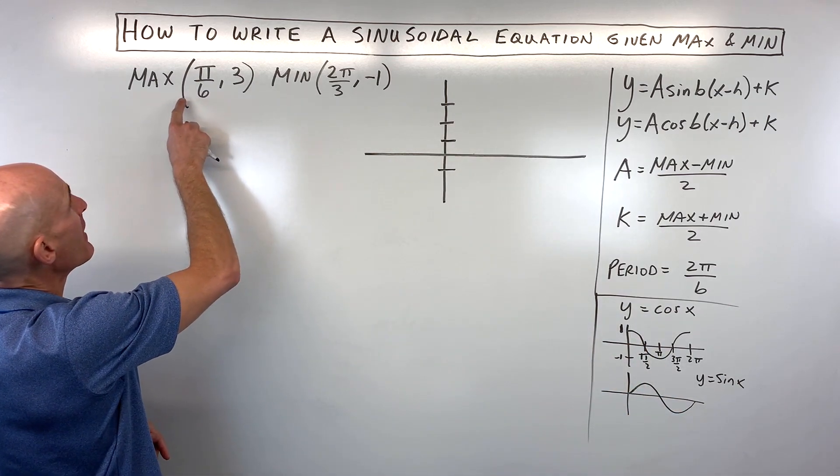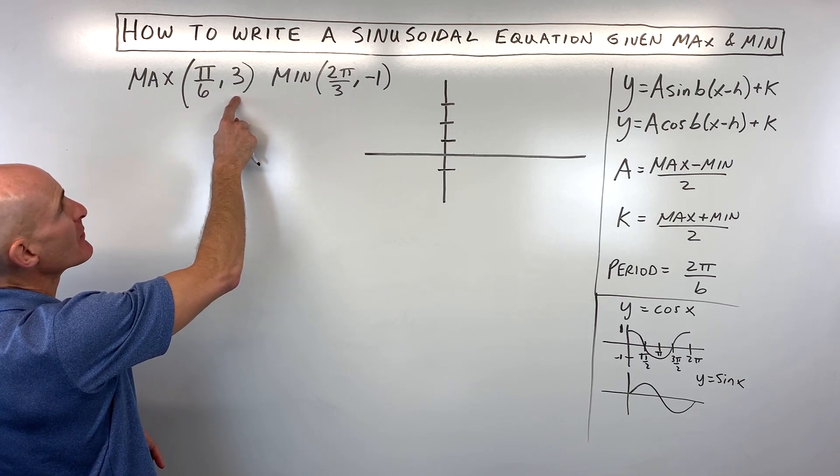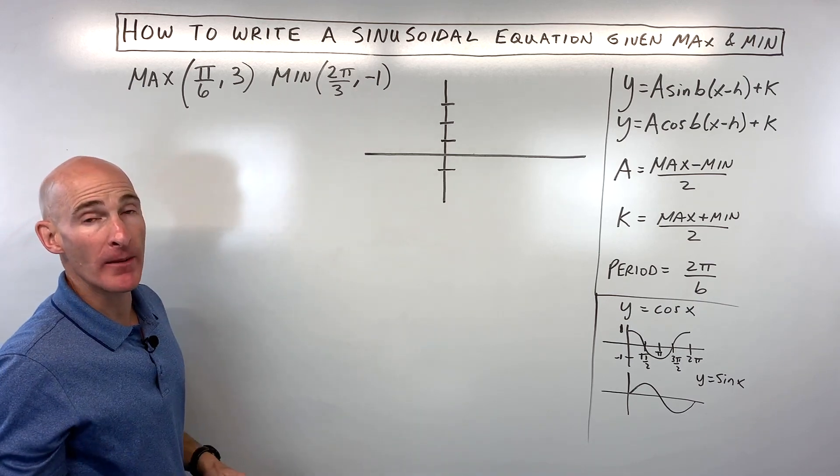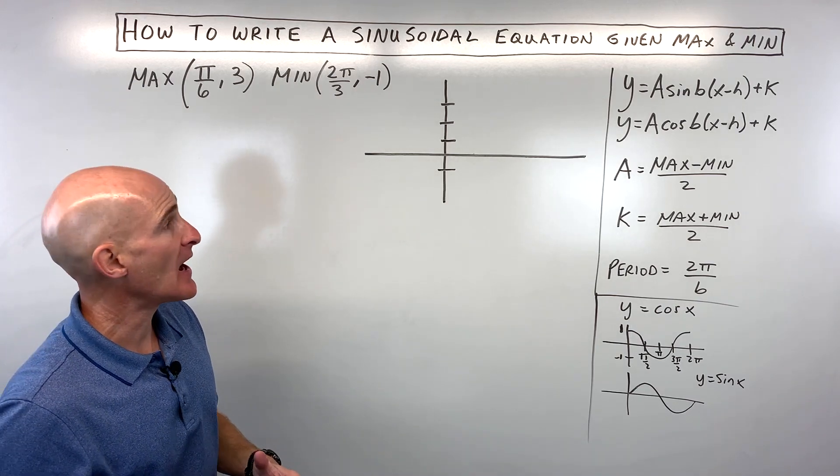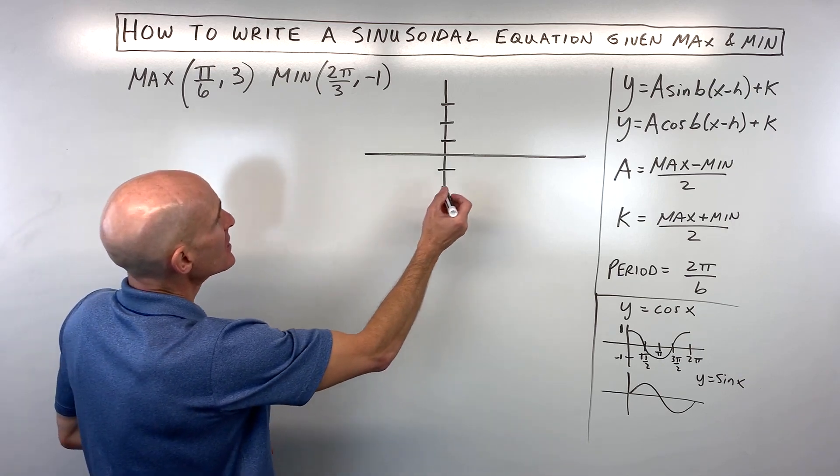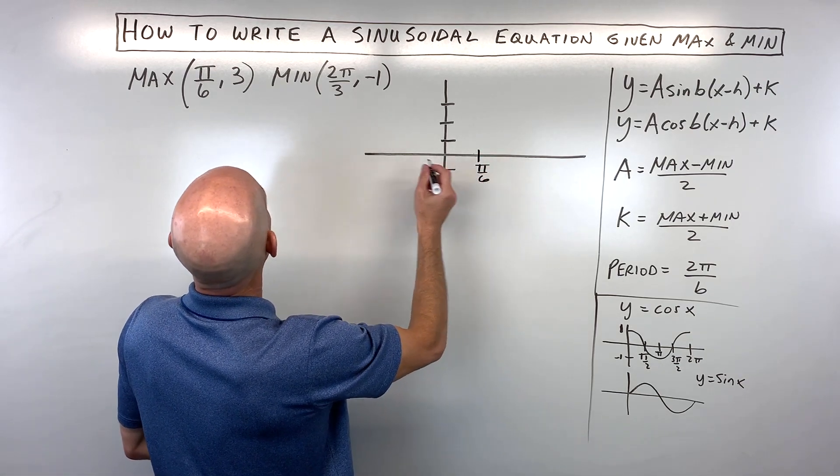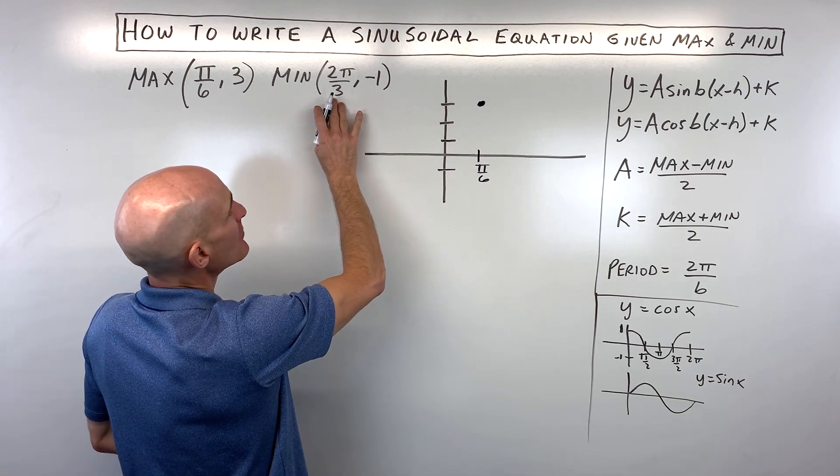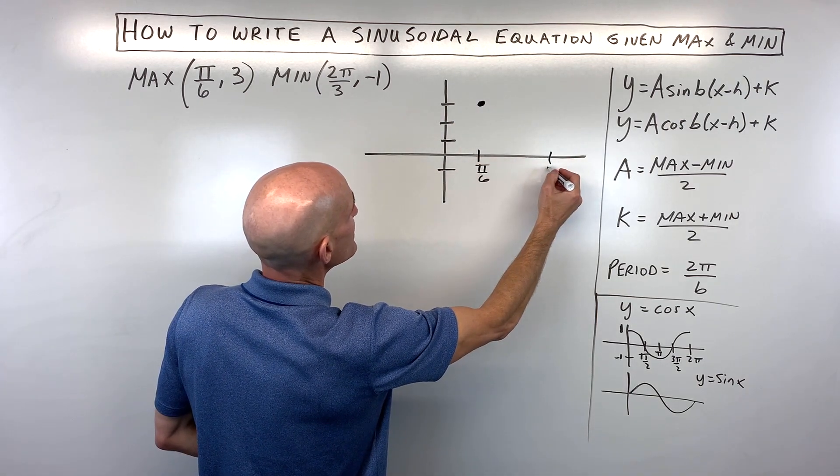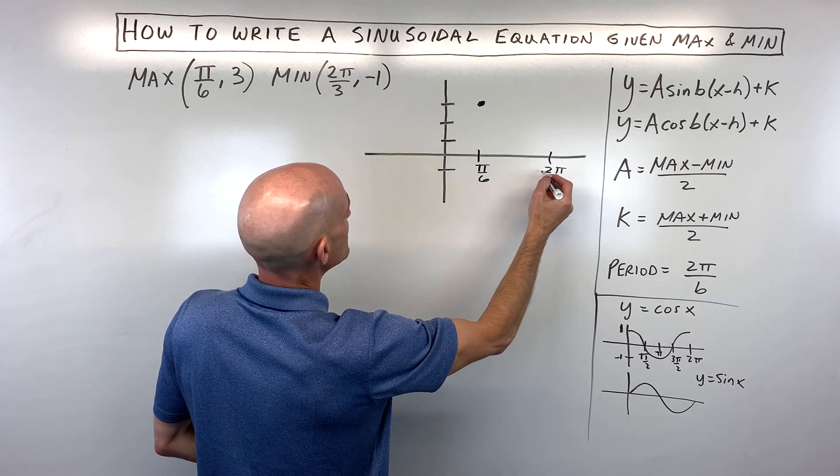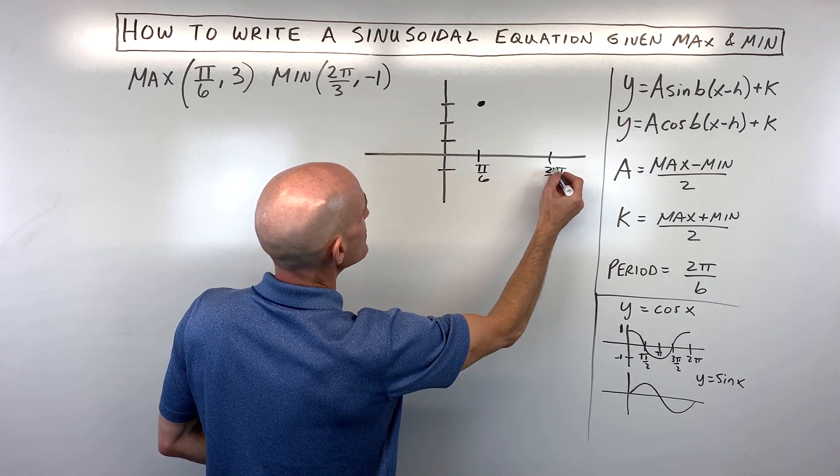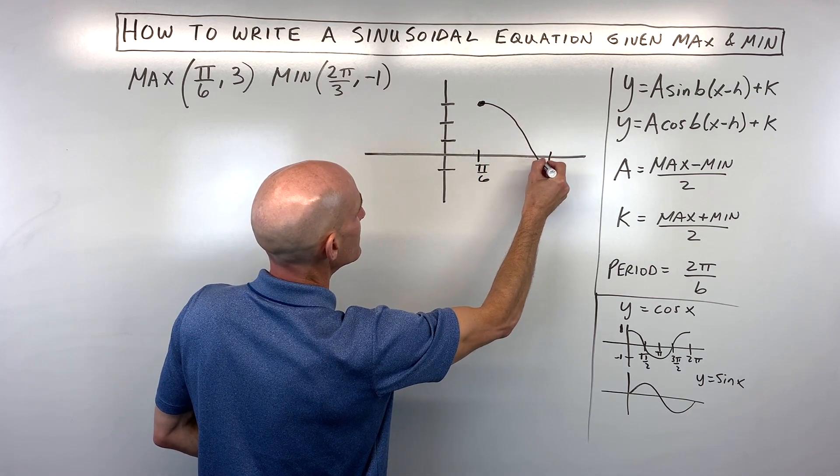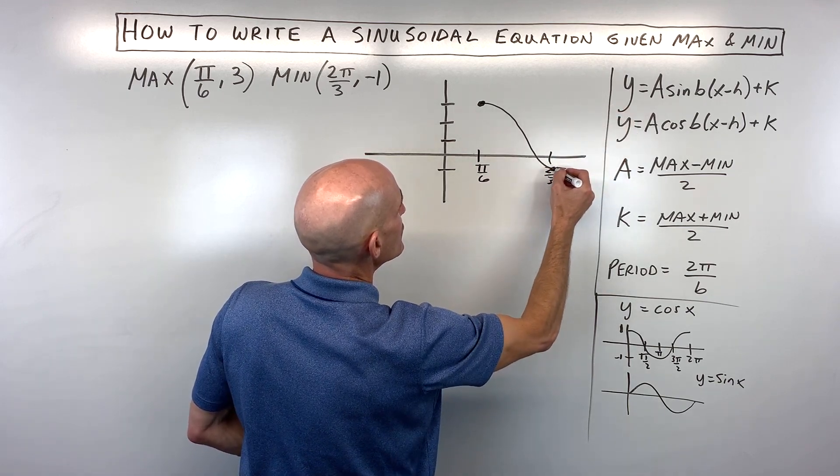So the first thing we're given here is a max of pi over 6 comma 3, that's a high point on the graph, and a minimum of 2 pi over 3 comma negative 1. What I like to do, just to visualize, is just to draw a rough sketch. So if pi over 6 comma 3 is right about here, and let's say the minimum here at 2 pi over 3 is somewhere over here at negative 1, I'll just put it right there. So basically our graph looks something like this.